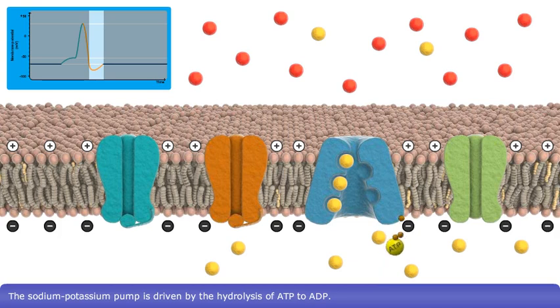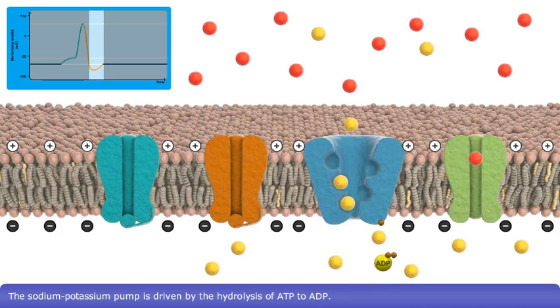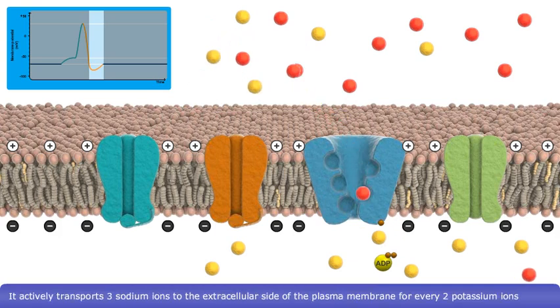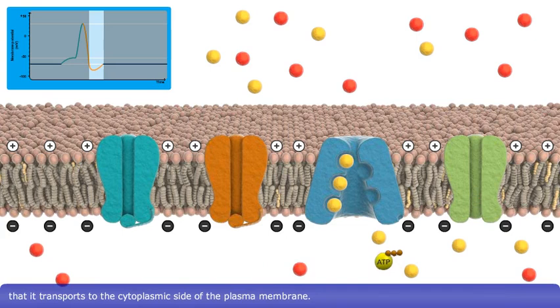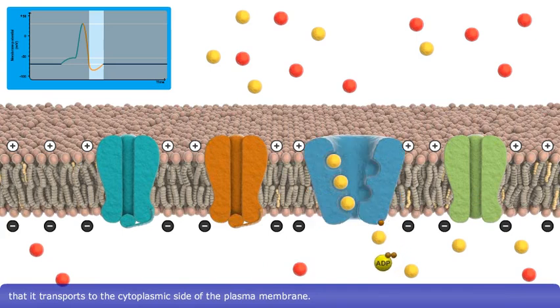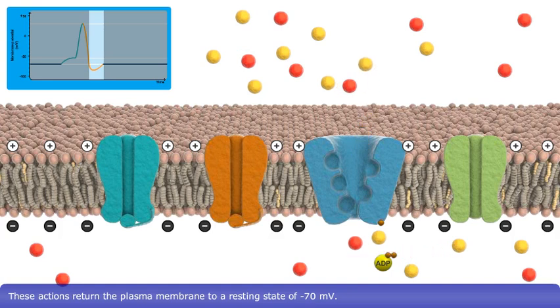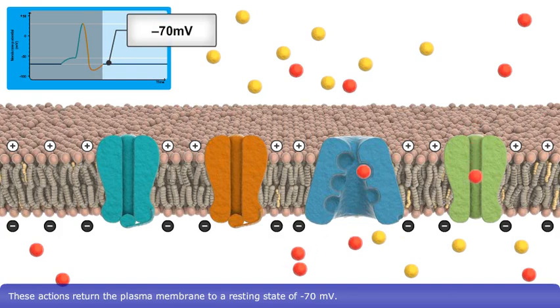The sodium-potassium pump is driven by the hydrolysis of ATP to ADP. It actively transports three sodium ions to the extracellular side of the plasma membrane for every two potassium ions that it transports to the cytoplasmic side of the plasma membrane. These actions return the plasma membrane to a resting state of minus 70 millivolts.